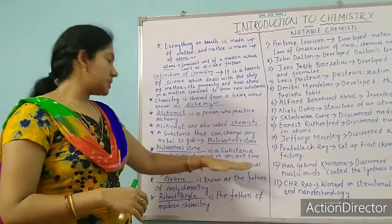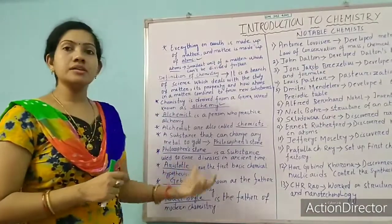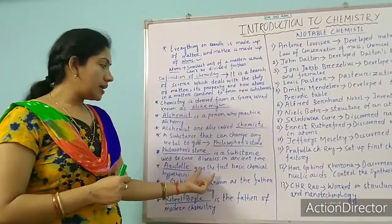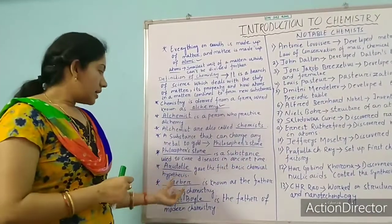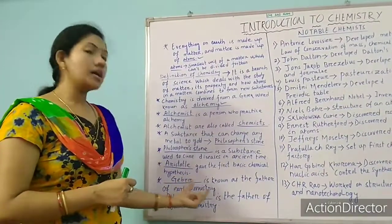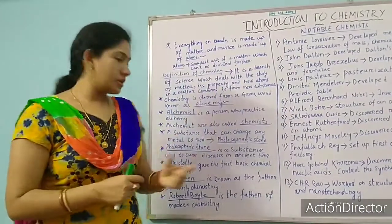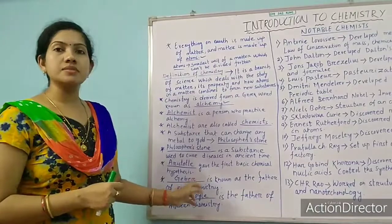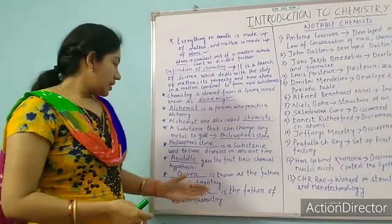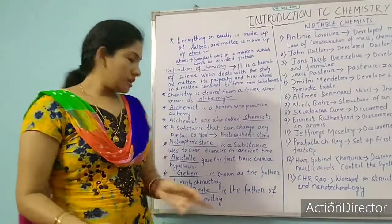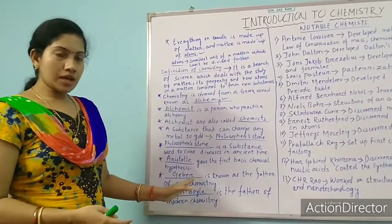Who gave the first basic chemical hypothesis? Aristotle. The answer is Aristotle — he is a scientist who gave the first basic chemical hypothesis. Who is known as the father of early chemistry? Jabir. Jabir is known as the father of early chemistry. Who is the father of modern chemistry? Robert Boyle.